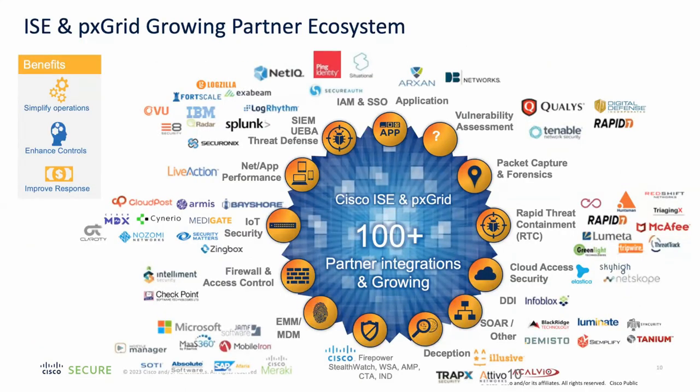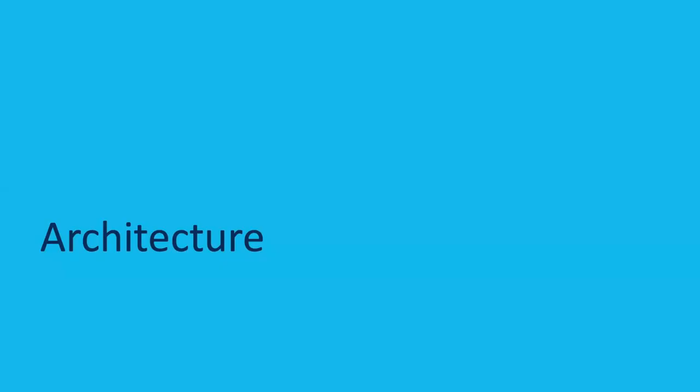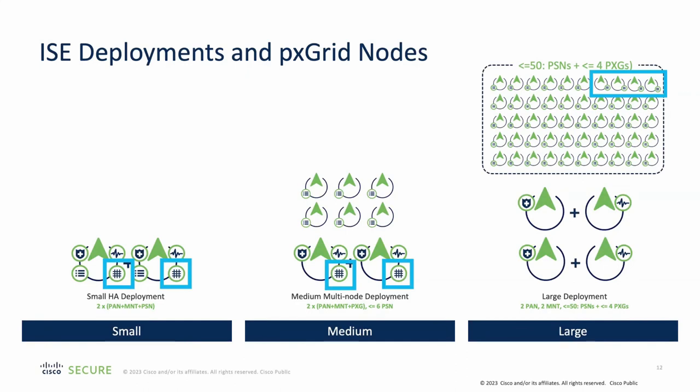There are hundreds of integrations available for PXGrid from third parties and our own Cisco products. Let's quickly jump into the architecture of PXGrid. These are the three supported deployment models for ISE: small deployment with just two nodes, medium deployment with up to eight nodes, and the fully distributed deployment with up to 50 PSNs.